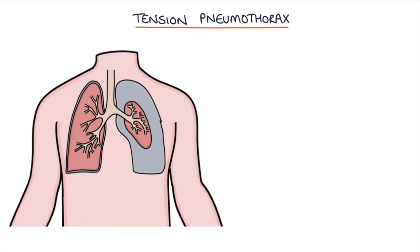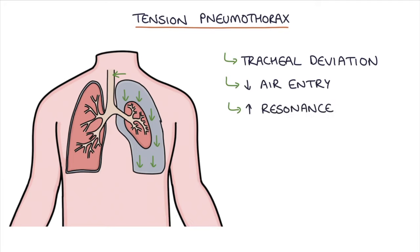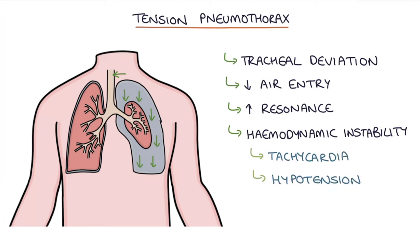What are the signs so you can recognize a tension pneumothorax? Importantly there'll be tracheal deviation away from the side of the pneumothorax, reduced air entry on the affected side. When you percuss the chest there'll be increased resonance on the affected side because it's full of air, and there'll be hemodynamic instability. So there'll be tachycardia with a fast heart rate and hypotension with a low blood pressure.